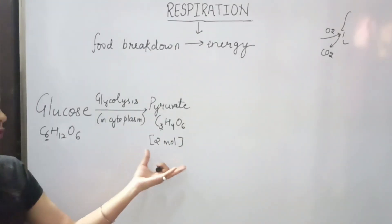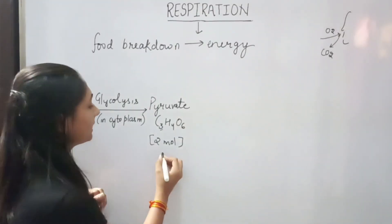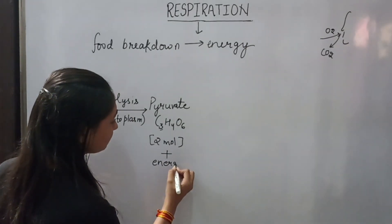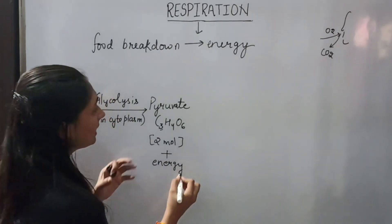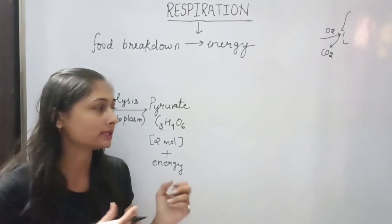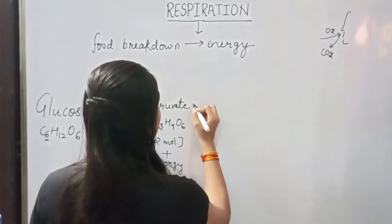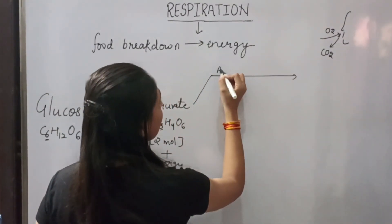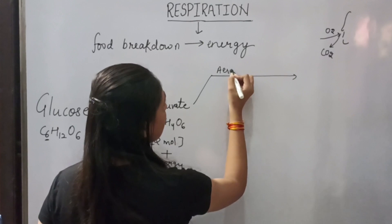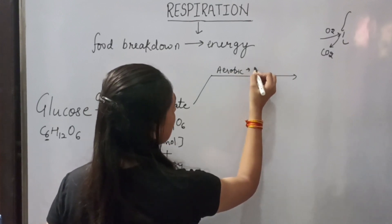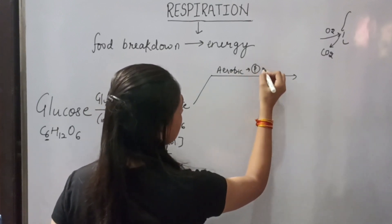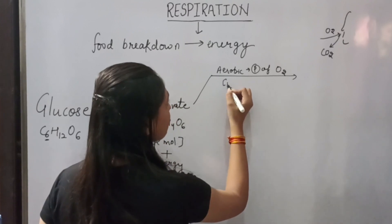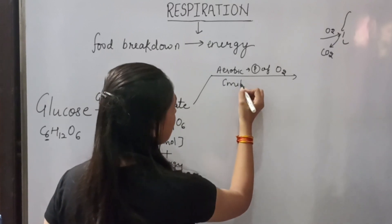When glucose breaks down, two pyruvate molecules will be formed, and some energy will be released. If we talk about aerobic respiration, it is respiration in the presence of oxygen, and this process takes place in the mitochondria of the cell.